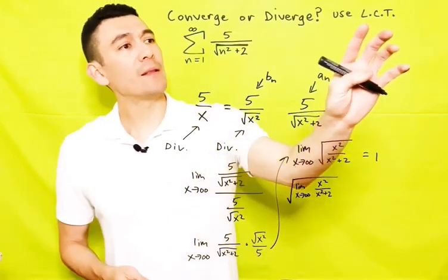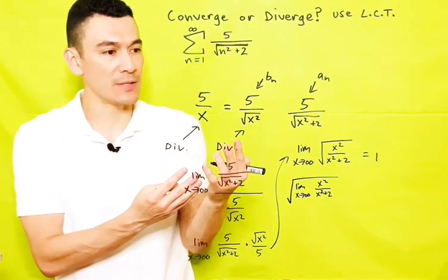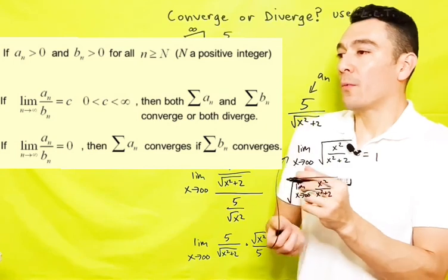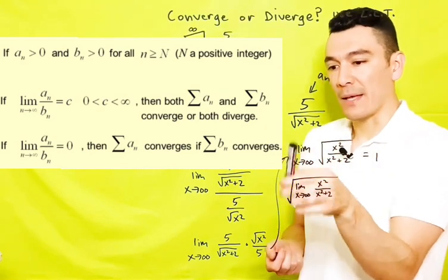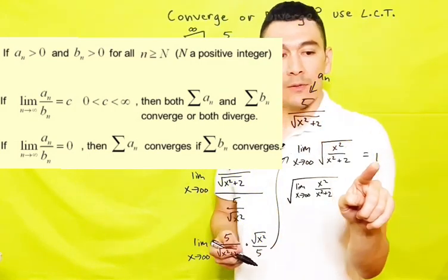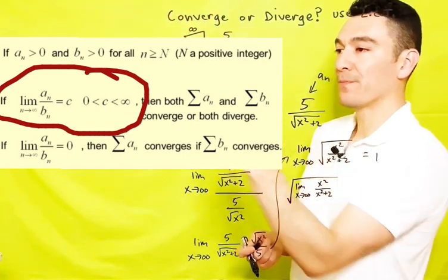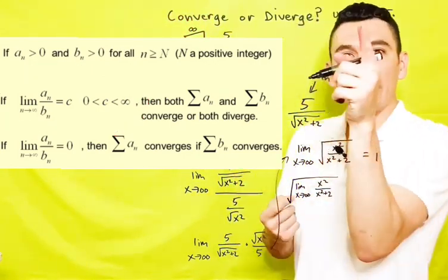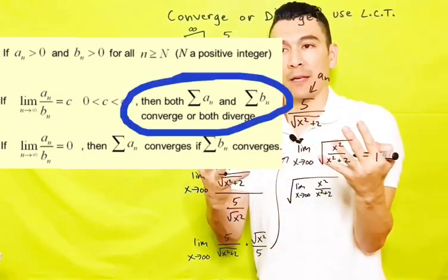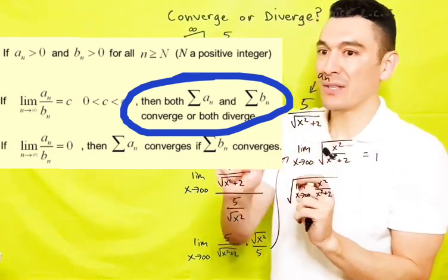So we've applied the limit comparison test. But what were the rules pertaining to the limit comparison test? Let's take a look at them right here. Notice that we divided A sub n by B sub n there and we got back a finite value of 1. So that plays the role of the C expression in this upper option. Since we got back 1, the limit comparison test says that A sub n and B sub n do the same thing - they either both converge or they both diverge. But since we established that our B sub n diverged by P series...